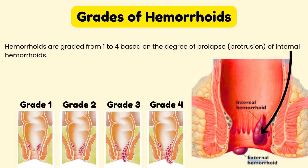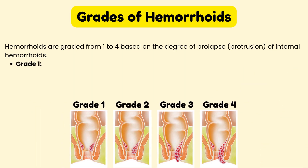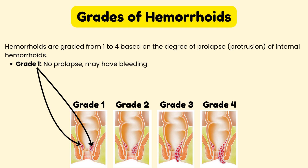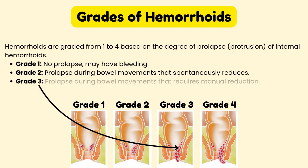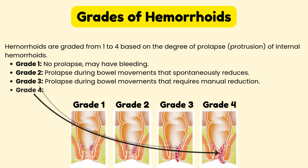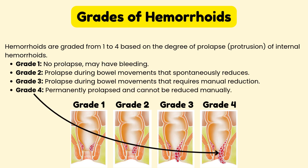Grade 1: no prolapse, but may have bleeding. Grade 2: they prolapse during bowel movements and spontaneously reduce. Grade 3: they prolapse during bowel movements and require manual reduction. Grade 4: they are permanently prolapsed and cannot be reduced manually.